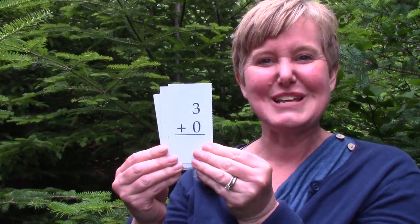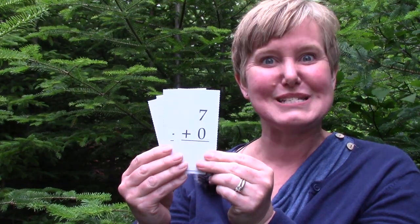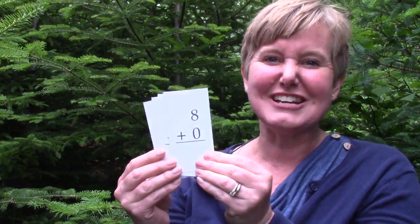Two plus zero is two. Three plus zero is three. Four plus zero is four. Five plus zero is five. Six plus zero is six. Seven plus zero is seven. Eight plus zero is eight. And nine plus zero is nine.